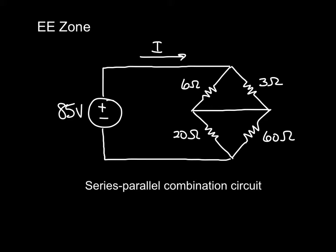Here I have a series-parallel combination circuit. We have an 85 volt DC source. We have some resistors here. We're not really sure what's going on there, but it'll become clear that they are indeed in series and parallel. What we're trying to do is find the total current of this circuit.